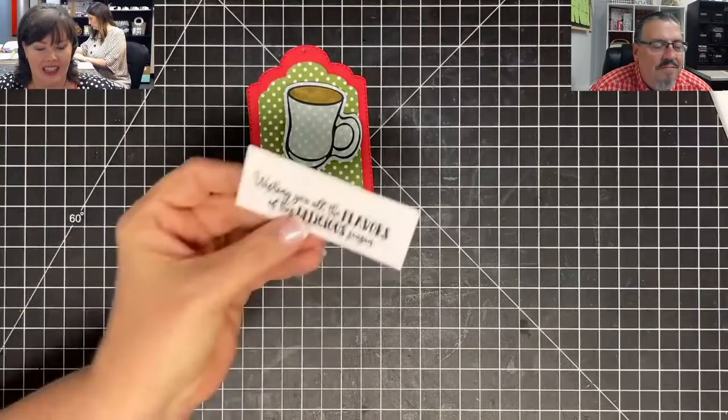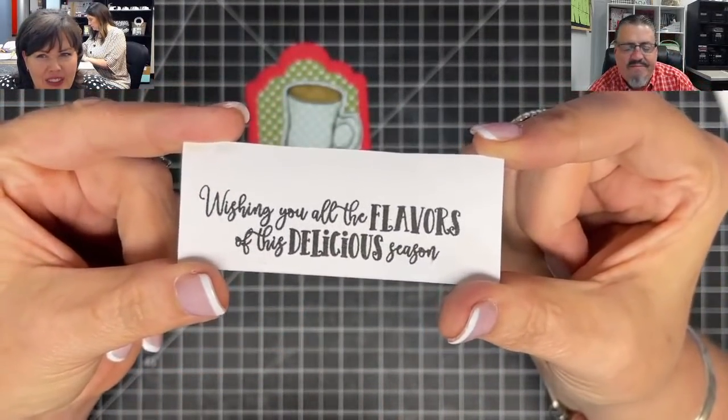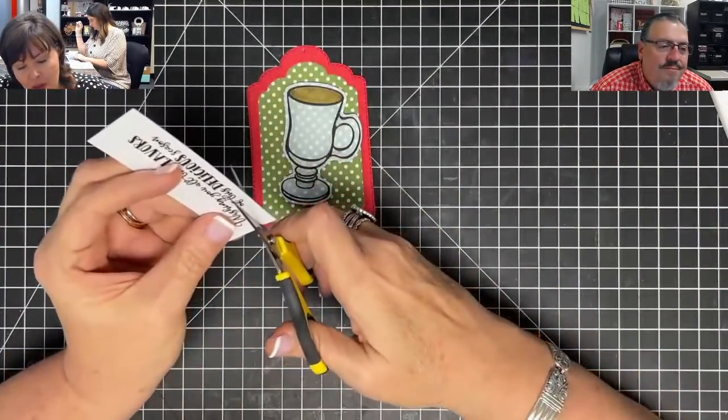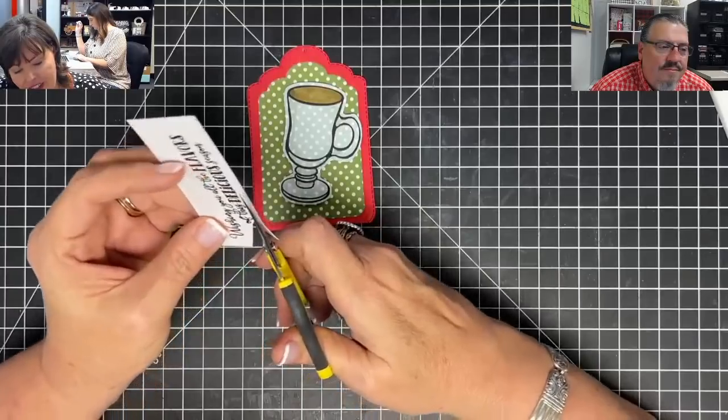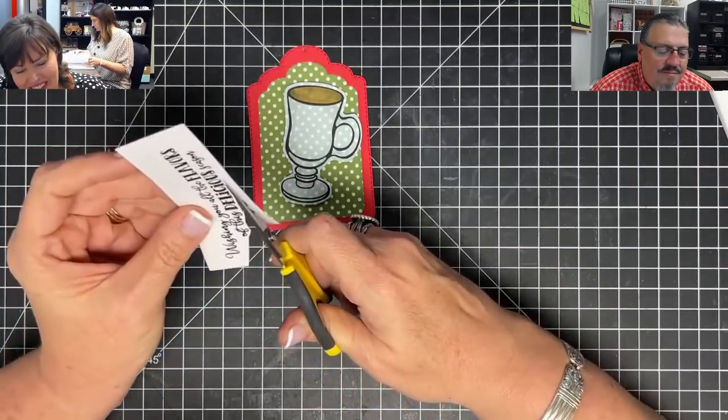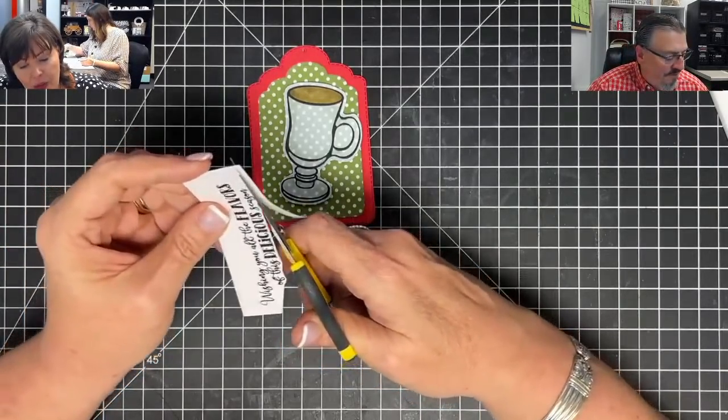This, I put a little off to one side. Anywhere like that. It doesn't matter how you do it. How you want to do it, you do it. Now, then, this. This is the sentiment I'm using. It is so cute. Wishing you all the flavors of this delicious season. Isn't that cute? I love that. We're going to fussy cut.